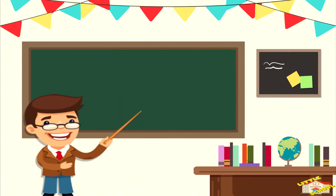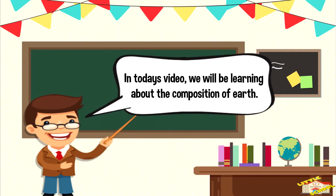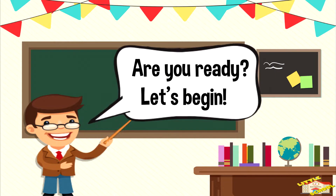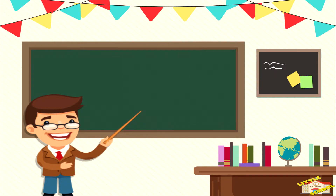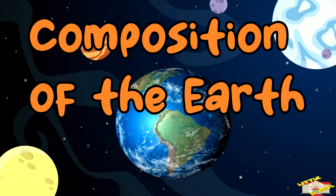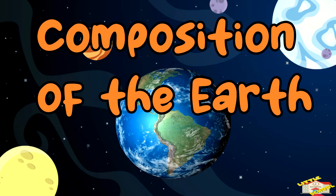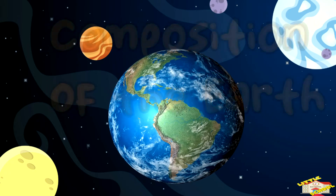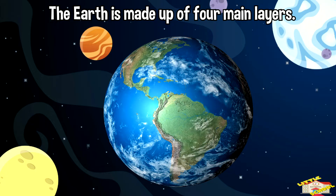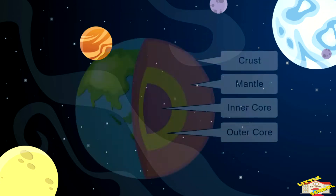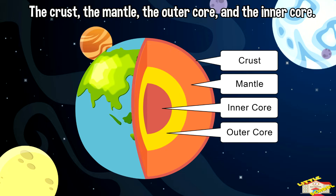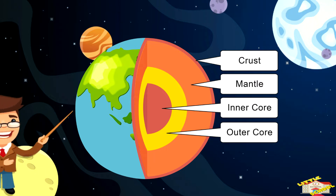Hey kids! In today's video we'll be learning about the composition of Earth. Are you ready? Let's begin. The Earth is made up of four main layers: the crust, the mantle, the outer core, and the inner core.